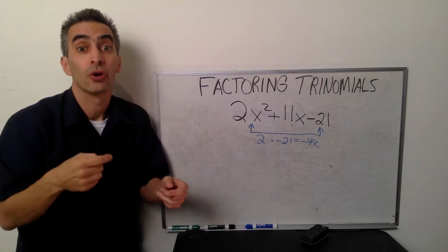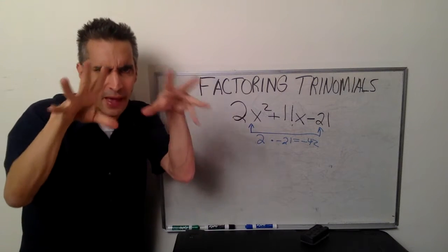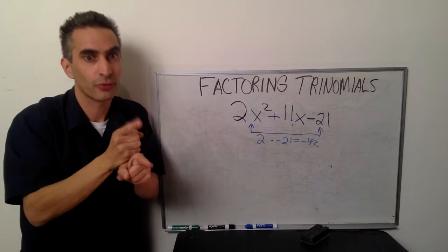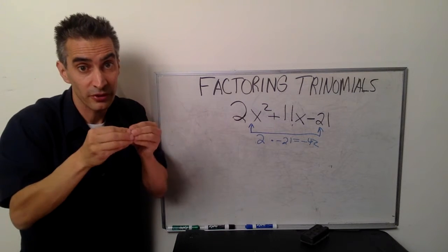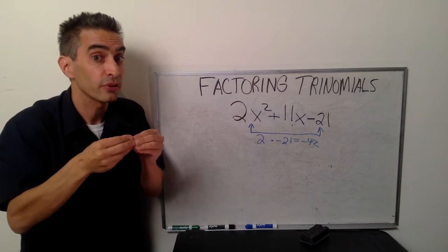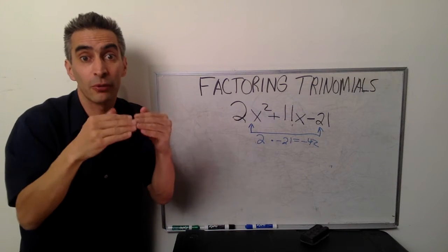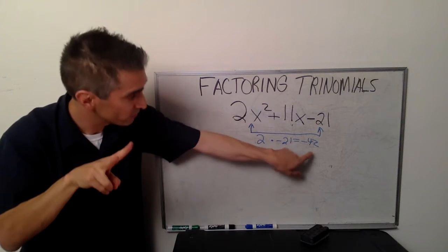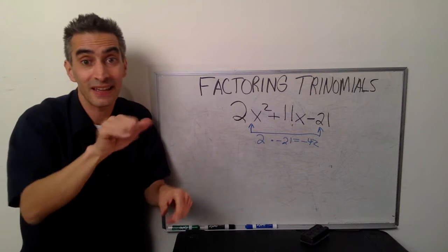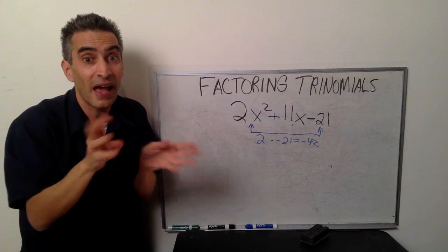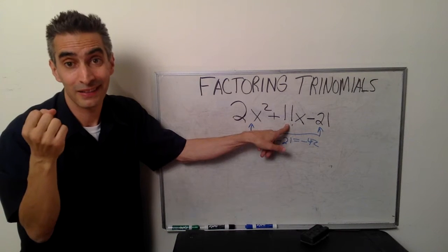Now, what are we going to do? We must find two magic numbers. We've got to find two numbers that multiply to equal negative 42, and the same two numbers are going to have to add up to 11.